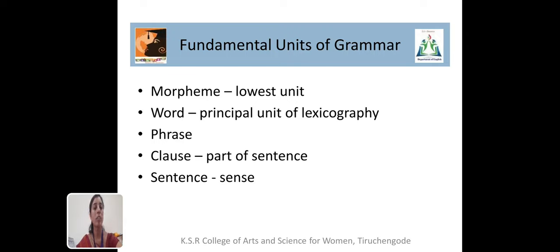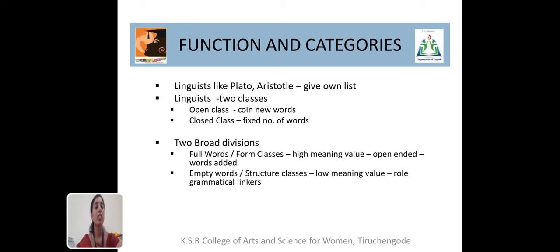A group of words which combine to form a clause. A clause has a subject and predicate. A clause has a main clause and a subordinate clause. The main clause has a complete sentence sense and also complete meaning. The subordinate clause always depends on the main clause to give a complete meaning. The sentence is considered as the largest unit of grammar.